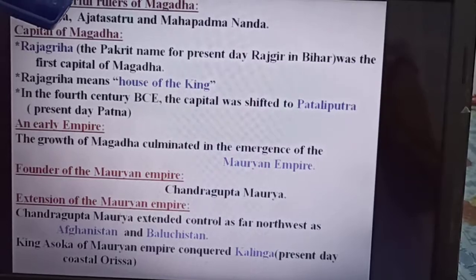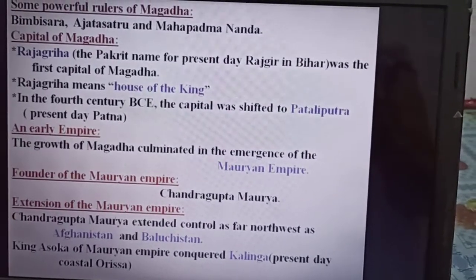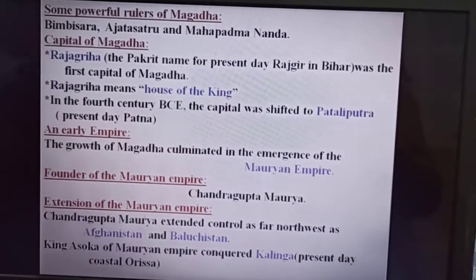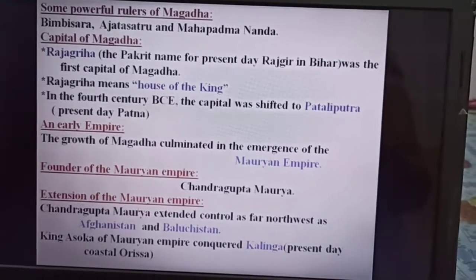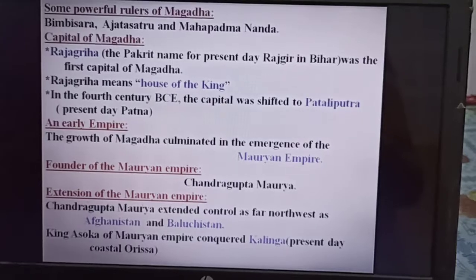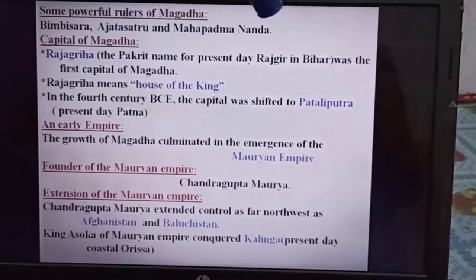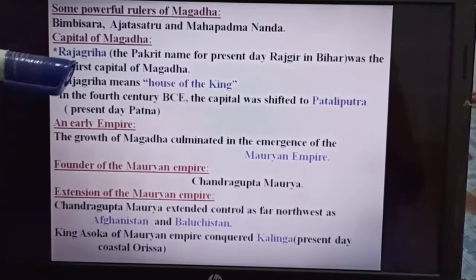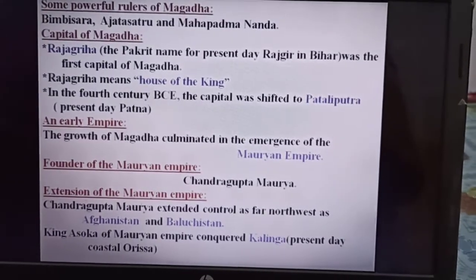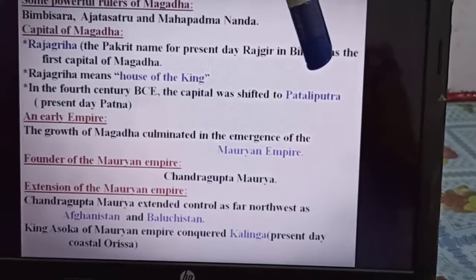The first capital of Magadha was Rajagriha. Rajagriha is a Sanskrit or Prakrit word meaning 'the house of the king.' It is located in present-day Rajgir in Bihar. Later, in the 4th century BCE, the capital was shifted to Pataliputra, which is present-day Patna.